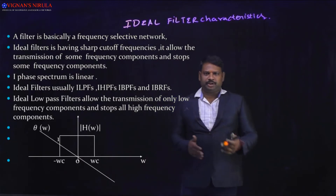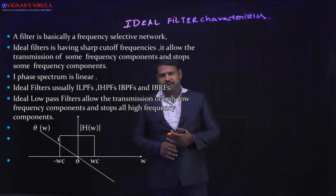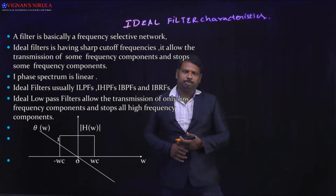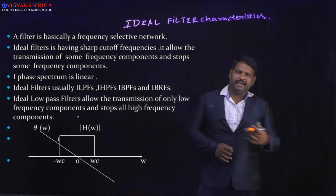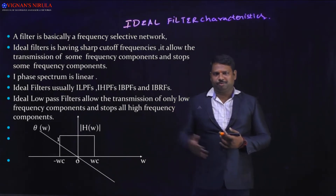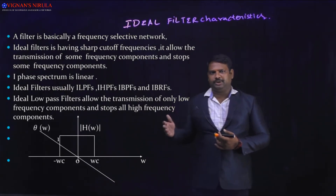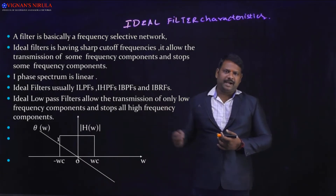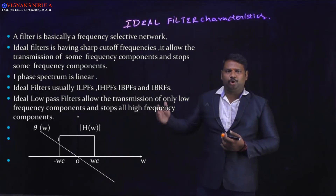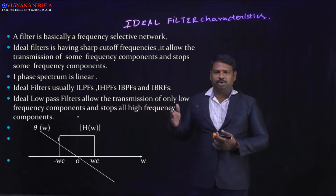In the case of the low-pass filter, this happens. In the case of the high-pass filter, the reverse action will take place. The phase spectrum should always be a linear spectrum. Generally, these ideal filters can be divided into four types: ideal low-pass filter, ideal high-pass filter, ideal band-pass filters, and ideal band rejection filters.